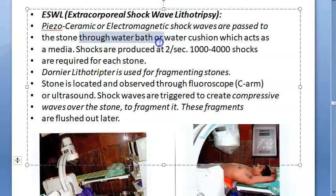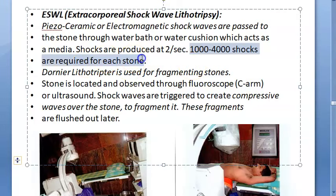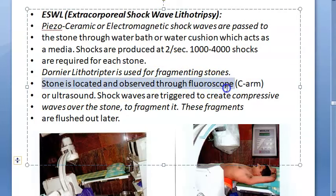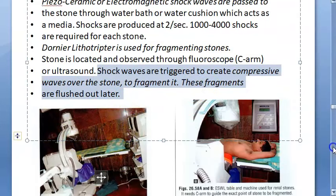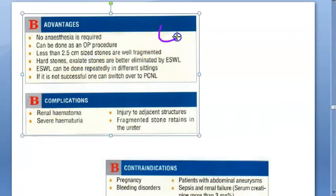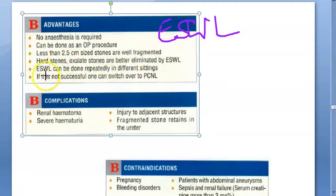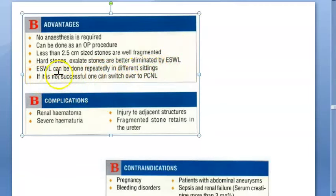The machine produces shocks at two per second; 1,000 to 4,000 shocks are required per stone. Dornier lithotripsy is used for fragmenting stones. The stone is located via fluoroscope (C-arm) or ultrasound. Advantages of ESWL: no anesthesia needed, can be done as outpatient, stones less than 2.5 cm are well fragmented. Hard oxalate stones are eliminated by ESWL, but not cystine stones.